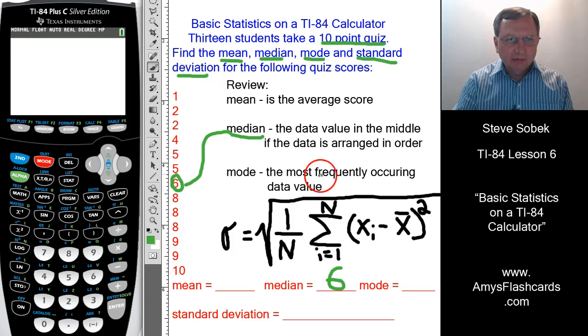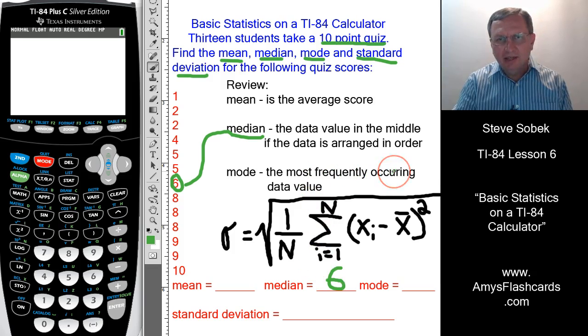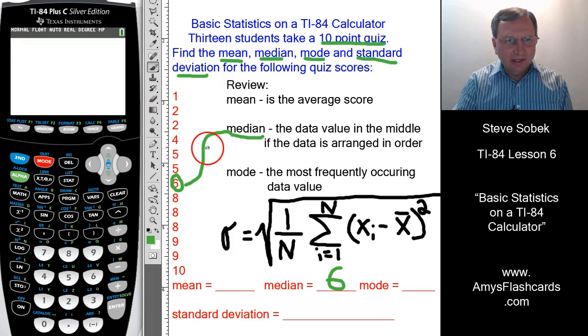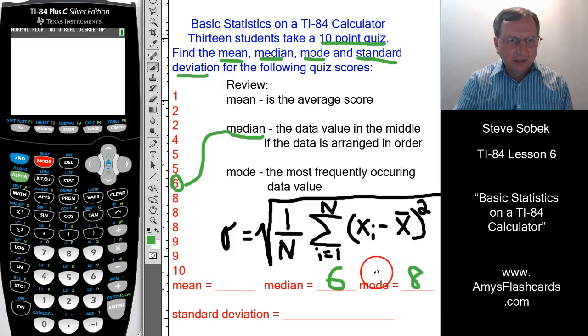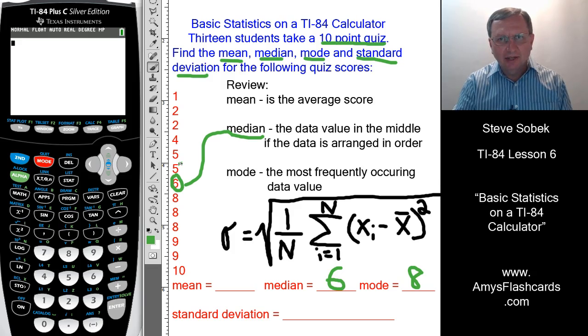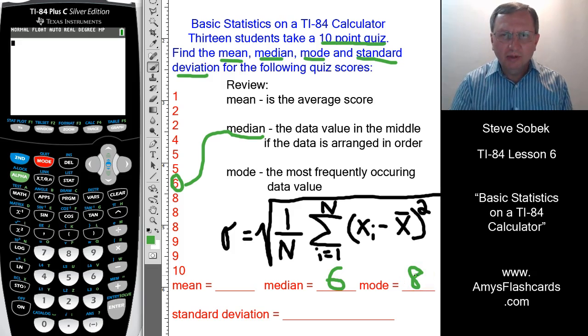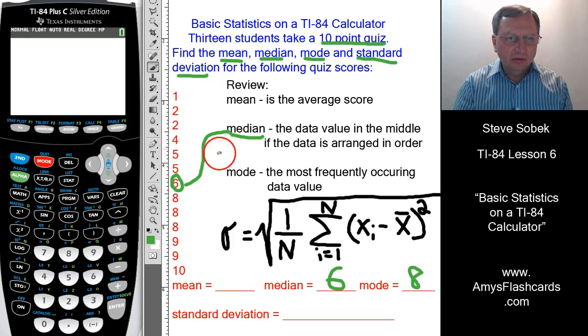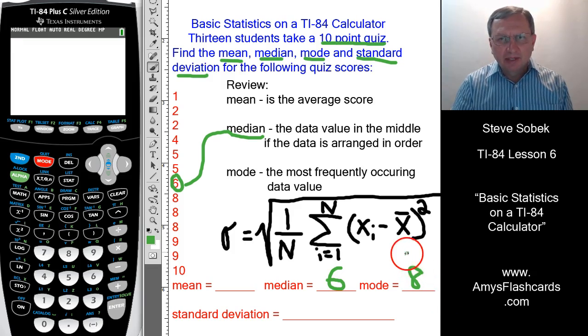The mode is the most frequently occurring data value. With such a small data set, it's very easy to ascertain that the eight is the most frequently occurring data value. It occurs three times. The nine occurs twice, the two occurs twice, the five occurs twice. Nobody beats the eight three times. So that would be the mode. It's possible to have more than one mode, by the way. But as it is, eight is the mode of this data set.